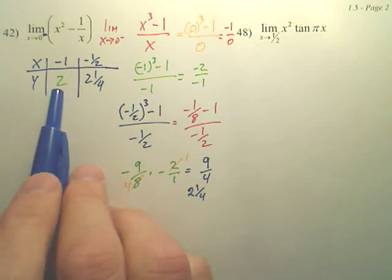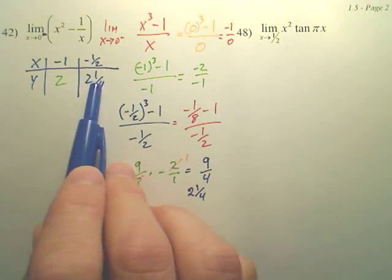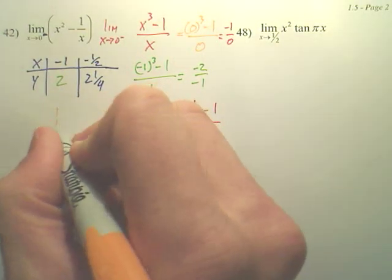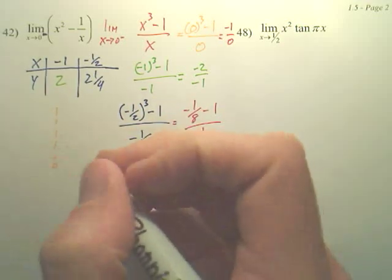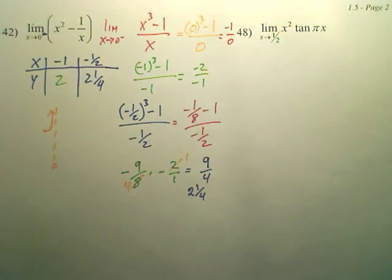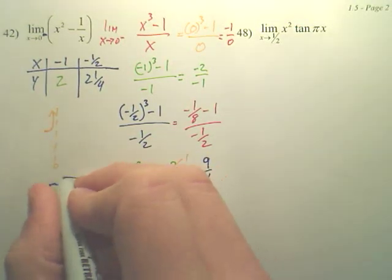Now, if you notice, we went from 2 and it grew by 1 fourth. So, if it's growing, that means it's going up. So what we notice about this graph is at the asymptote at 0, this graph is going to be going uphill. So our answer is going to be infinity.